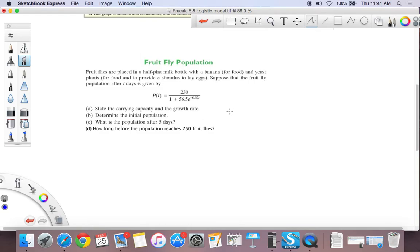State the carrying capacity and the growth rate. Well, if you don't know what the carrying capacity is, then you could figure it out. So the carrying capacity comes from what happens when t goes to infinity. So the carrying capacity, if t was really large, you'd get 230 divided by 1 plus 56.5e and then a really large exponent here. So let's make t really large at 100.